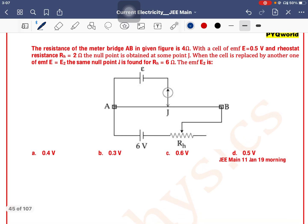The resistance of meter bridge AB in given figure is 4 ohm. With the cell of EMF 0.5 volt and rheostat resistance 2 ohm, the null point is obtained at some point J. When the cell is replaced by another one of EMF E2, the null point J is found for RH is equal to 6 ohm. The EMF E2 is?